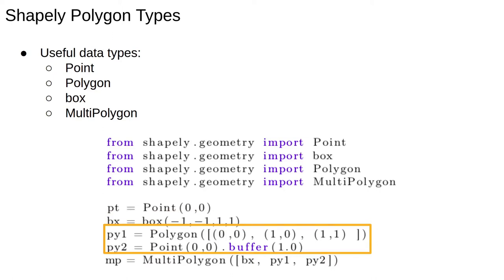pY1 shows how to convert a Python list into a polygon object. Note that the triangle is implicitly closed. Shapely assumes that the last point joins the first one. pY2 is a circle centered at 0,0 of radius 1.